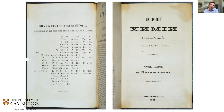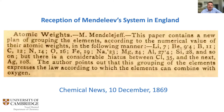Mendeleev published his periodic table in 1869. The announcement in English journals was completely underwhelming — it simply described 'a new plan of grouping the elements according to the numerical value of their atomic weights,' even introducing an error by giving Fe (iron) instead of fluorine for mass 19. Nobody really paid much attention to it at first.